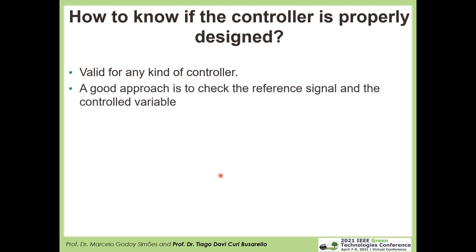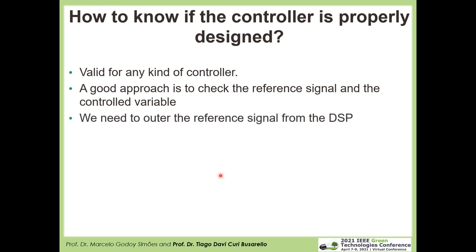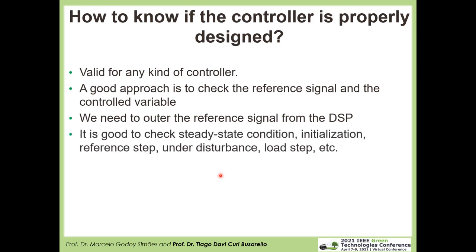A good approach is to check the reference signal and the controlled variable. We need to alter the reference signal from our digital signal processor — since usually the reference is within the digital control unit — and then observe it on an oscilloscope. It is good to check static state condition, initialization, reference step, disturbance, load step, and so on. Then we can verify if our controller is properly designed and check if the response under a step change is in accordance with our design. We can also check the error signal in our control strategy.